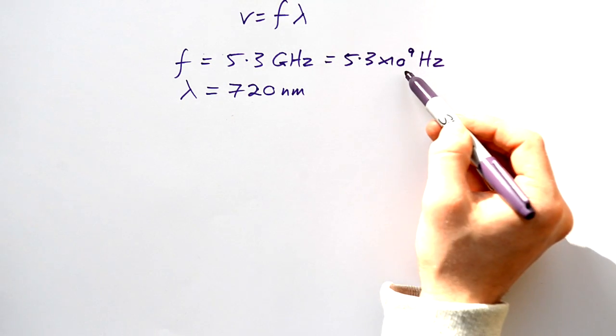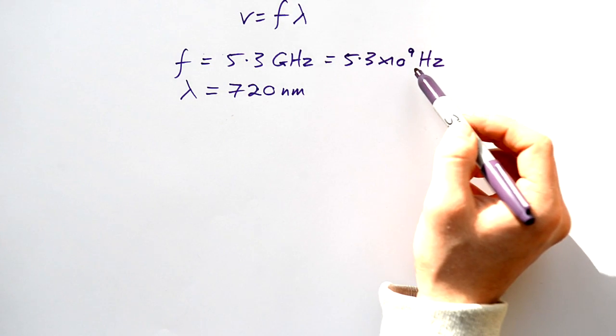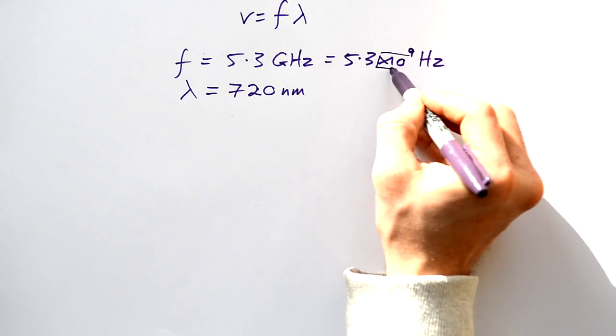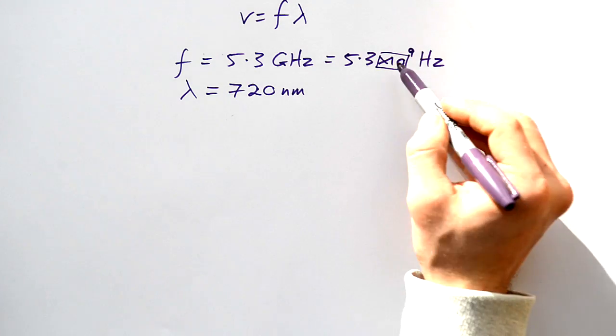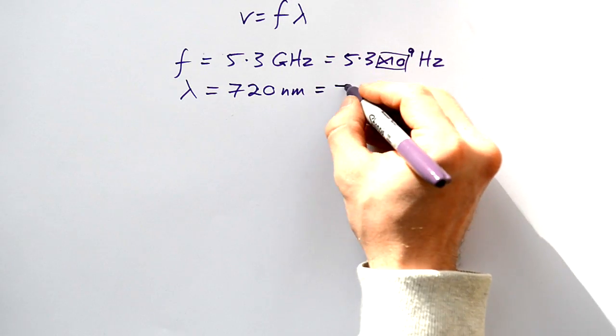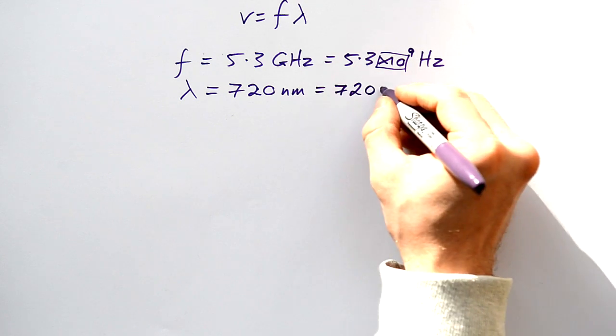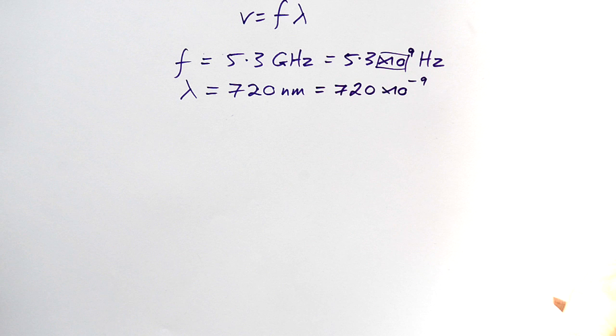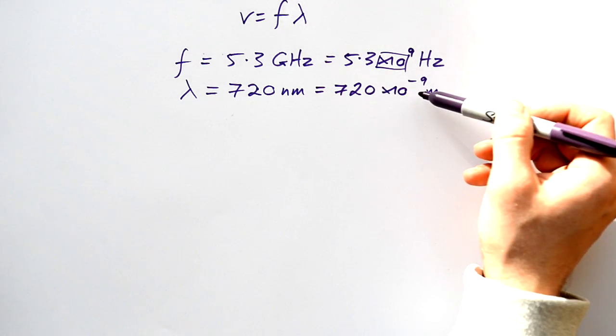I can now put this into my calculator by just pressing 5.3 and then the times 10 button, or EXP button - same thing - and then 9 afterwards. 720 nanometers - well, that's going to be 720 times 10 to the minus 9 because nano means times 10 to the minus 9. So again, I've gotten rid of the prefix and replaced it with standard form. I can now put this number straight into a calculation.